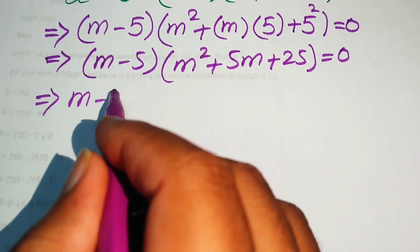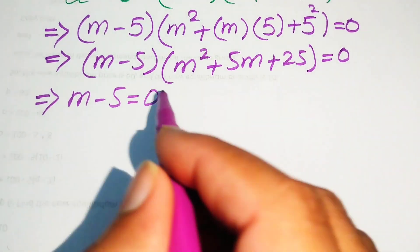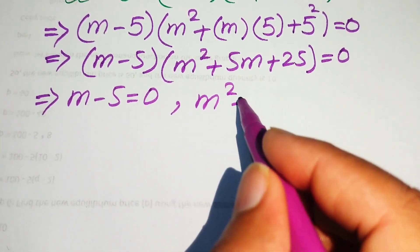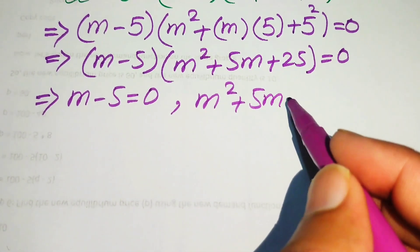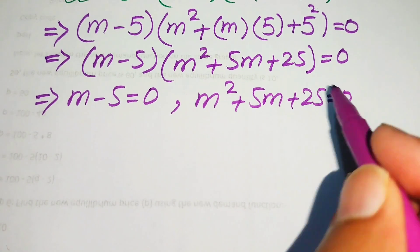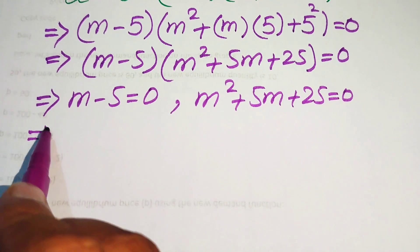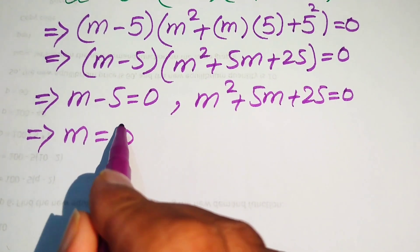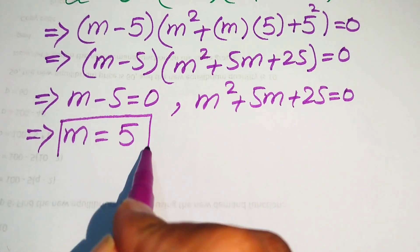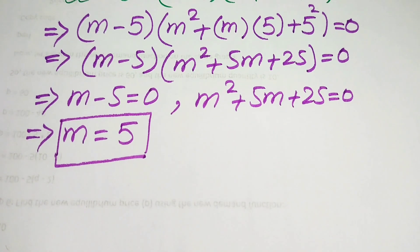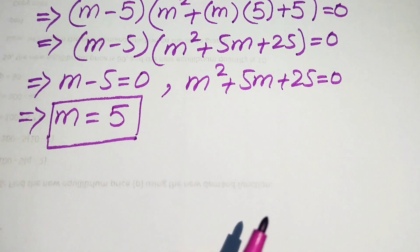We split this into two cases. Case one: m minus 5 equals 0, giving m equals 5. This is the first real solution of the given equation. Case two: m squared plus 5m plus 25 equals 0, which we solve next.